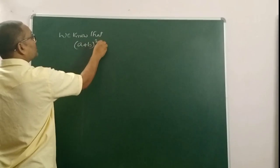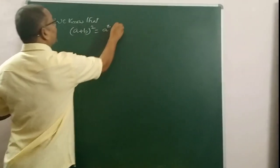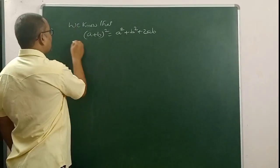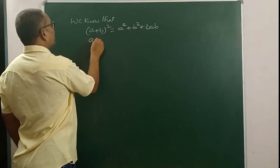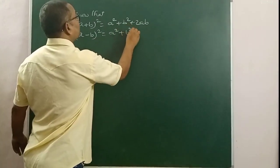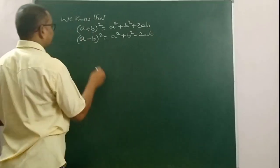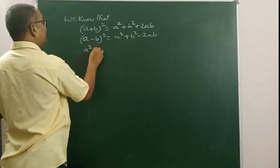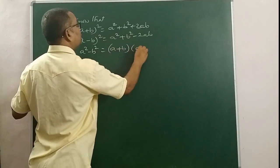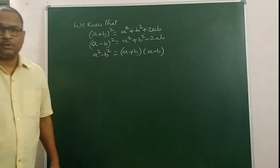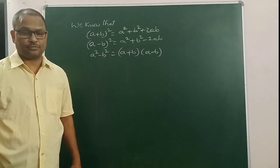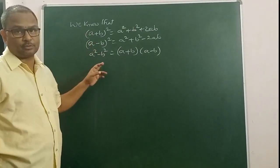A plus B whole square is equal to A square plus B square plus 2AB. A minus B whole square is equal to A square plus B square minus 2AB. A square minus B square is equal to A plus B into A minus B. Today we would like to discuss some examples of problems based on these three formulas.